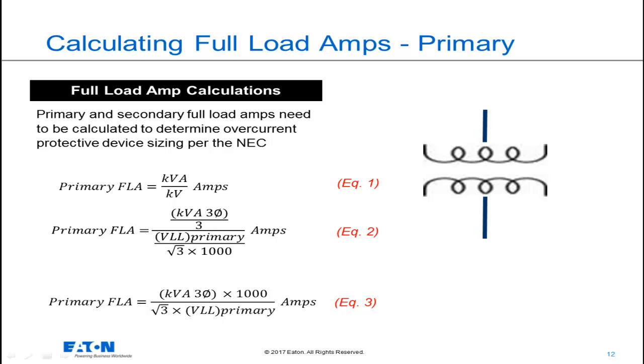That gets us to a single phase line-to-neutral voltage, or a single phase voltage. To get the single phase volts to a single phase kilovolts, I need to divide that number by 1,000. And now we have the single phase kilovolts in the denominator.